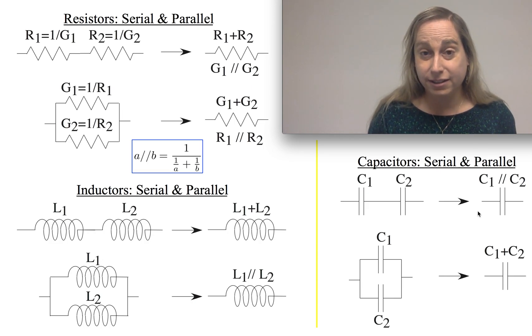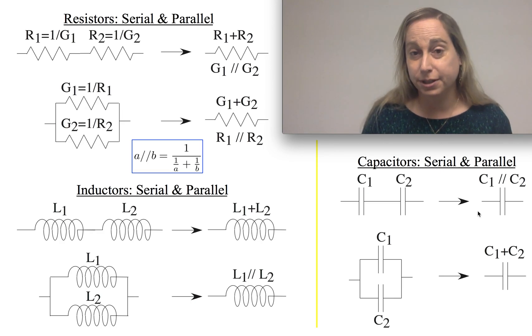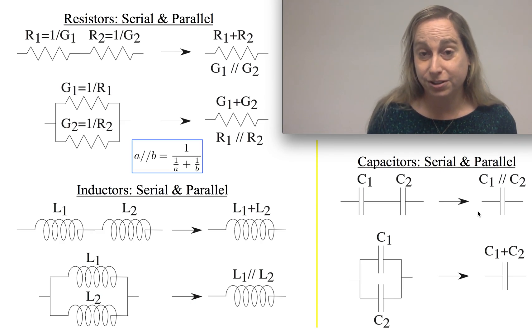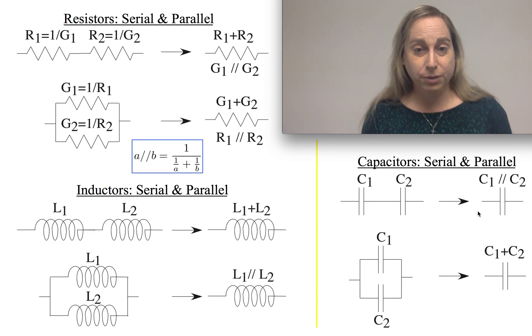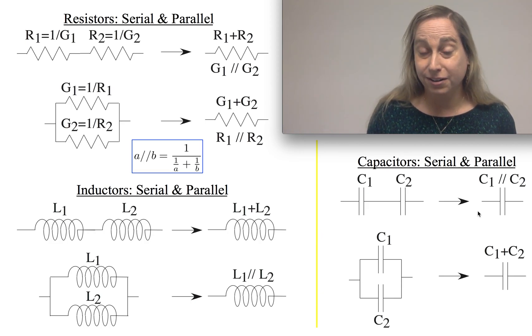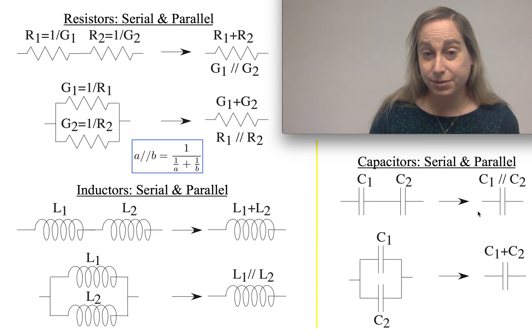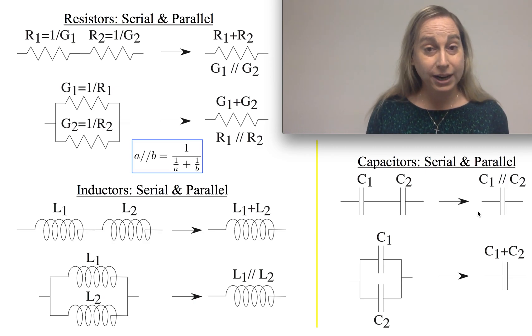And if you think about it, capacitance was current equals the capacitance times the derivative of voltage. Whereas, resistance was V equals IR, or voltage equals inductance times the derivative of current with time. So, it's not surprising you're seeing these kinds of similarities.